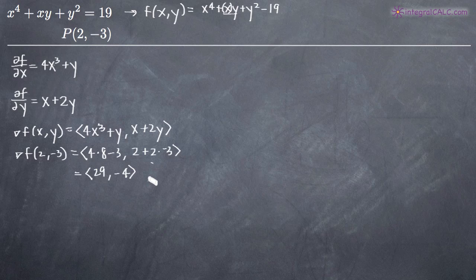So this here 29 comma negative 4 is the vector that's normal to the curve at the point p. What we really care about is that this is basically represented here as a comma b and the reason I write it that way is because we now have all the information we need to find the equation of the tangent plane.